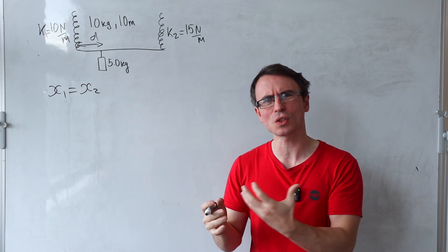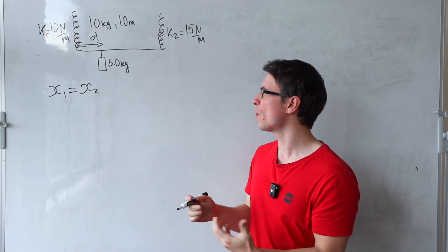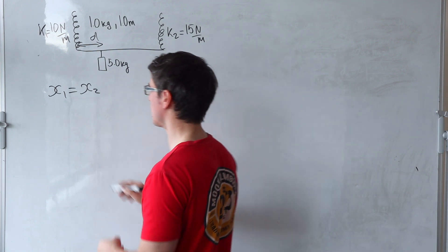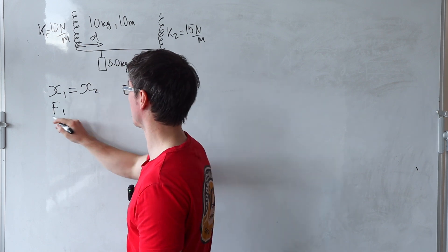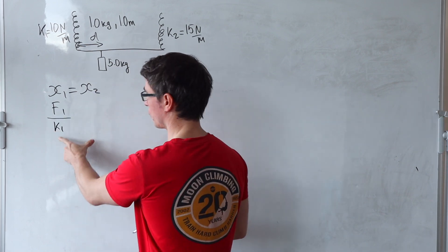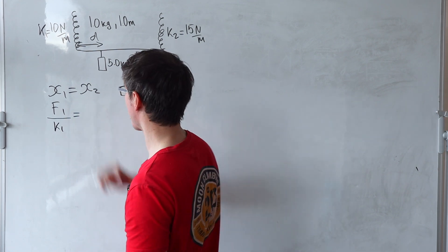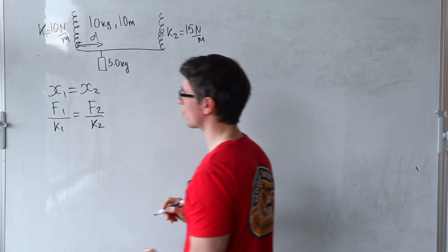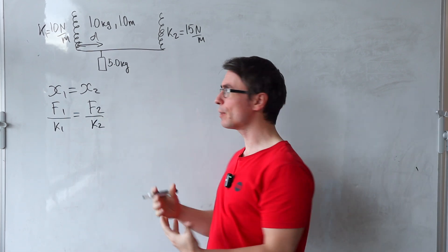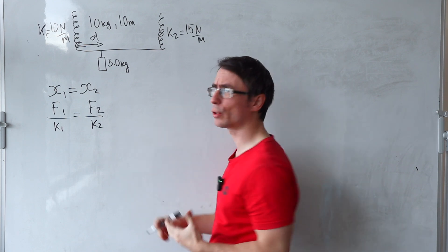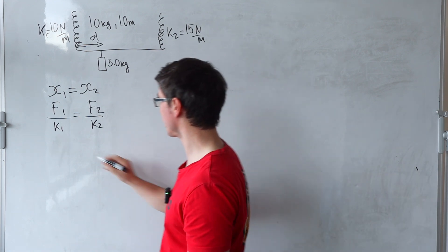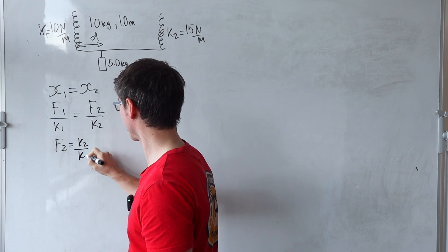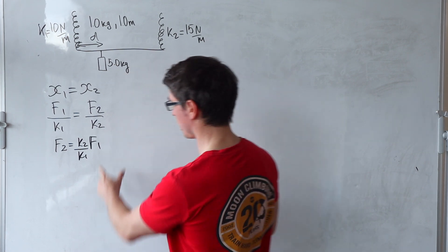F is equal to kx. This is just Hooke's law. So if we were to rearrange that for the extension, we're going to get that the extension will be equal to the force on spring one divided by the first force constant, and this will have to be equal to f2 divided by k2. And now suddenly we have an expression that will relate those two forces. So we can say that f2 will be equal to k2 over k1 multiply that by f1.